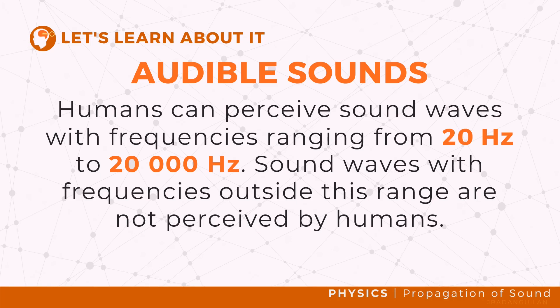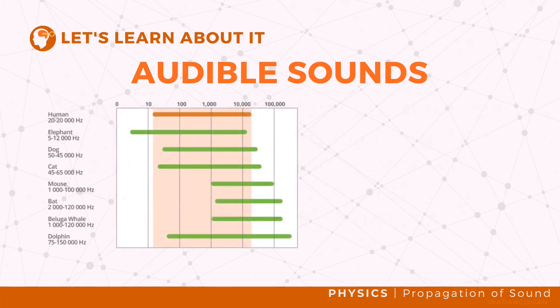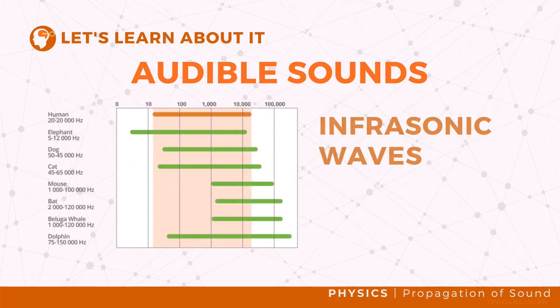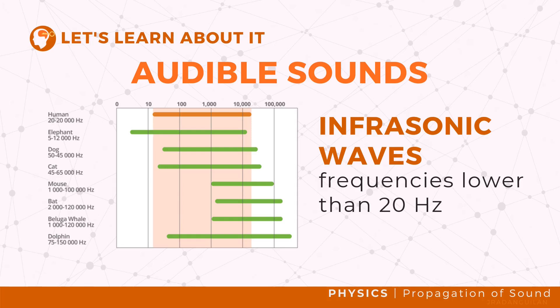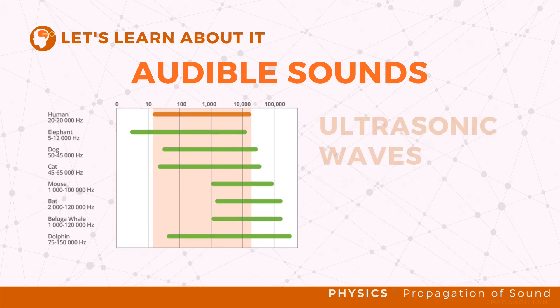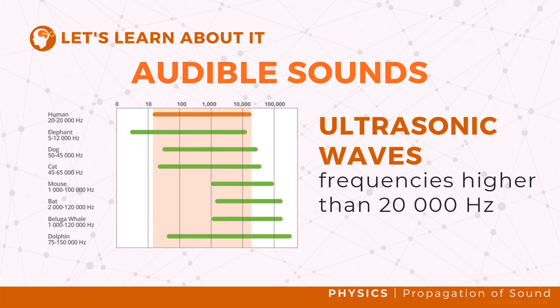Sound waves with frequencies outside this range are not perceived by humans. For instance, frequencies lower than 20 Hz are called infrasonic sound. Infrasonic sound waves are used by elephants in communication. Ultrasonic sound waves are waves with frequencies higher than 20,000 Hz.